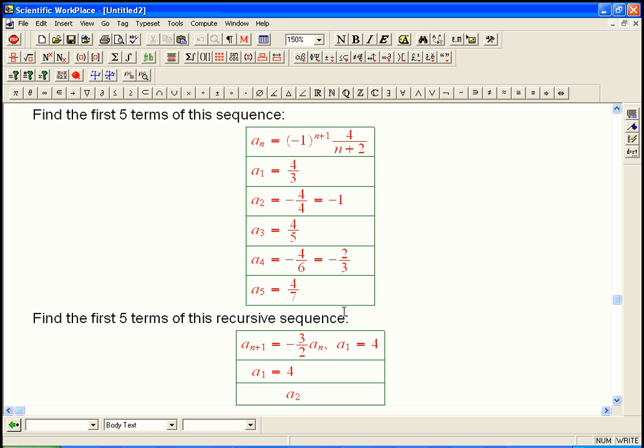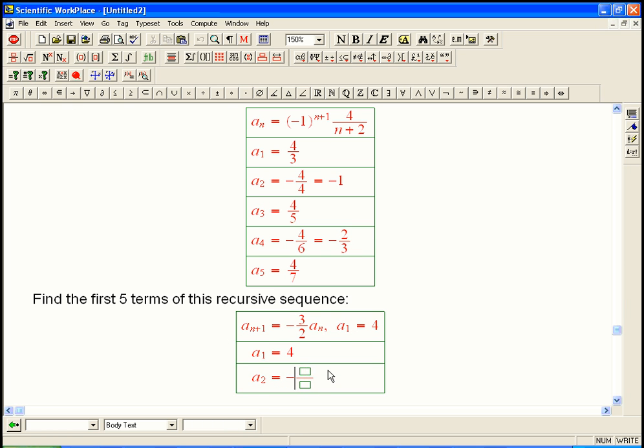A sub two, now, to find a sub two, do I plug in n equals two? No, I plug in n equals one. And this is a little different from how the book often writes things. I'll compare it to how the book writes things at the end. And a sub two would be when n equals one. Then this would match. And so I get minus three halves times four. Which is equal to minus six.